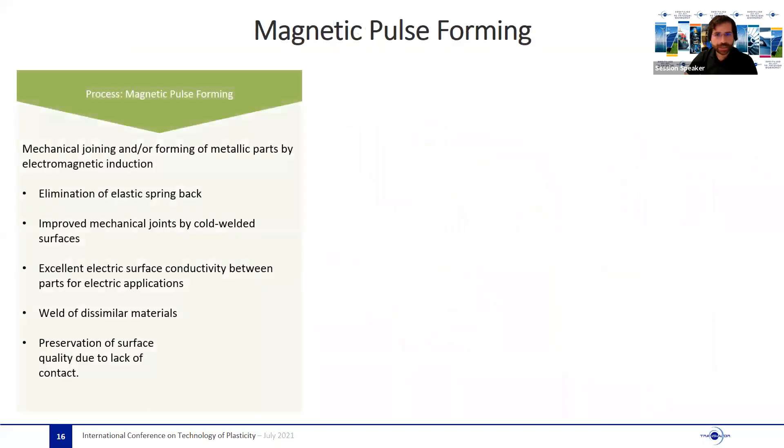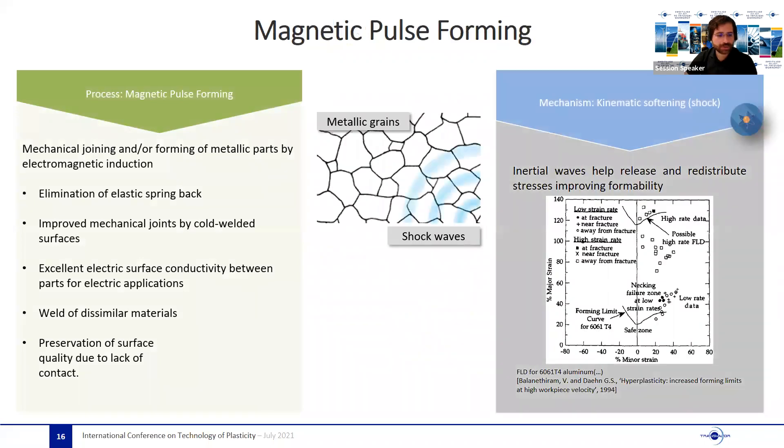The magnetic pulse forming process enables creating mechanical joints and also welding between similar materials. The process takes advantage of high-speed reach by the parts in order to achieve permanent plastic deformation with almost no elastic spring back. For welding applications, it can be considered as a cold weld, since the bonding between surfaces happens mainly because of a forced exchange of electrical bonds at the surface level.